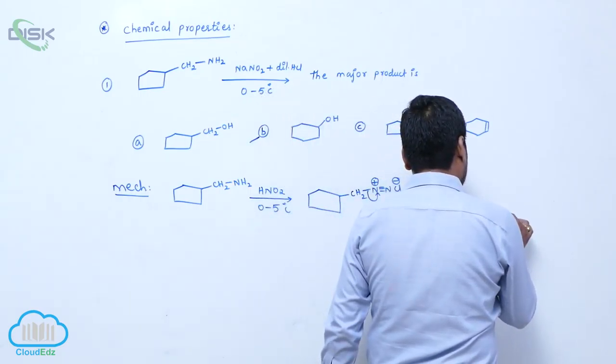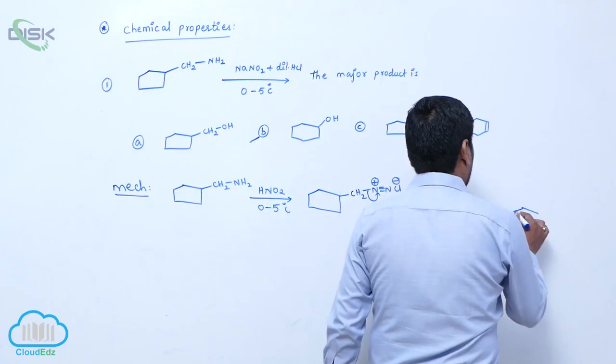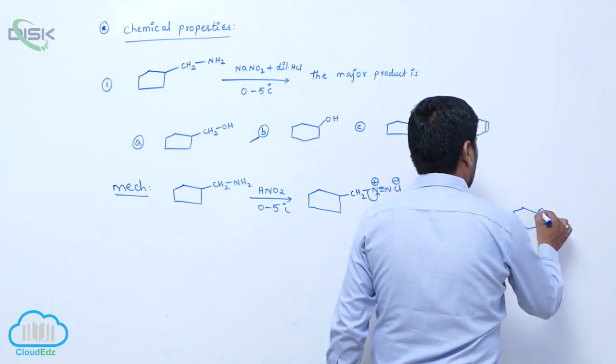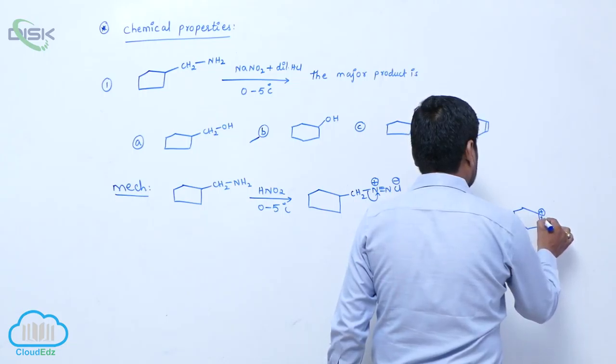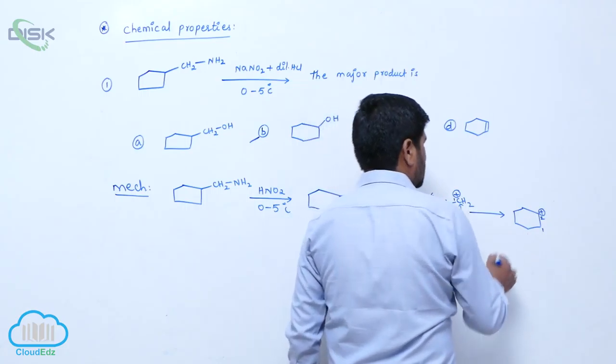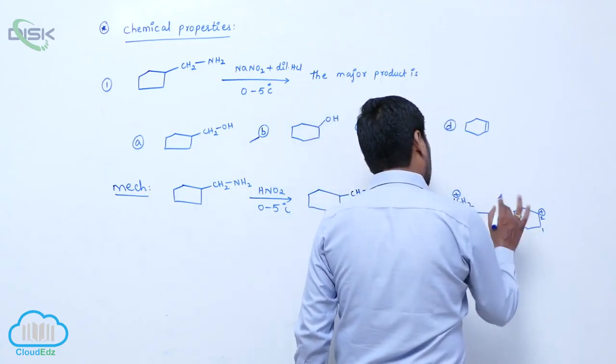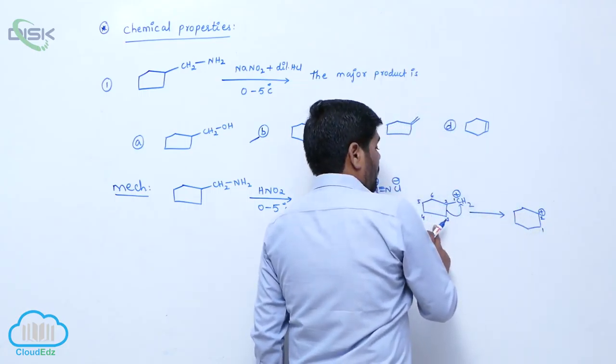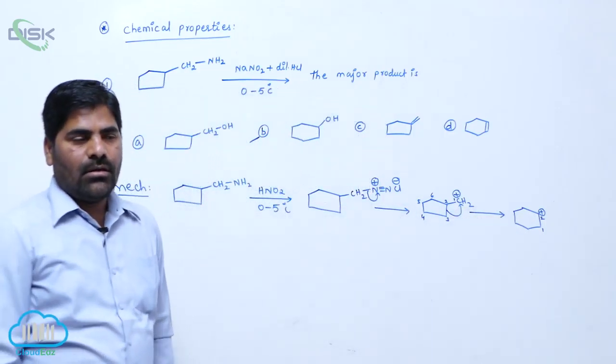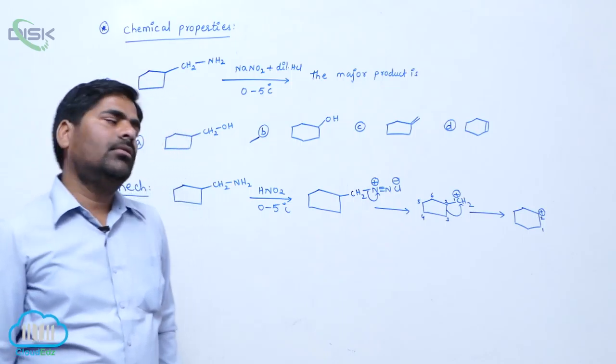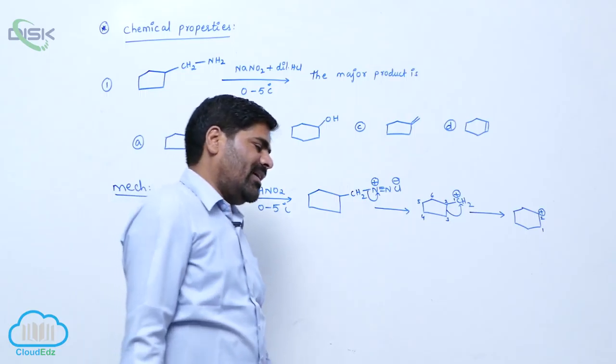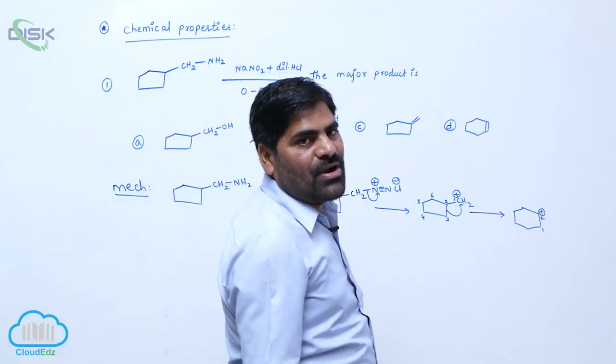it converts into a stable ring, that is, this is the first one, this is the second one. A stable carbocation, that is 2 degree, as well as ring stability increases. Because it is 5-membered ring, it is not 6-membered ring. Generally, 6-membered ring is more stable when compared to 5-membered ring because the angle strain is very less. When angle strain decreases, stability increases.